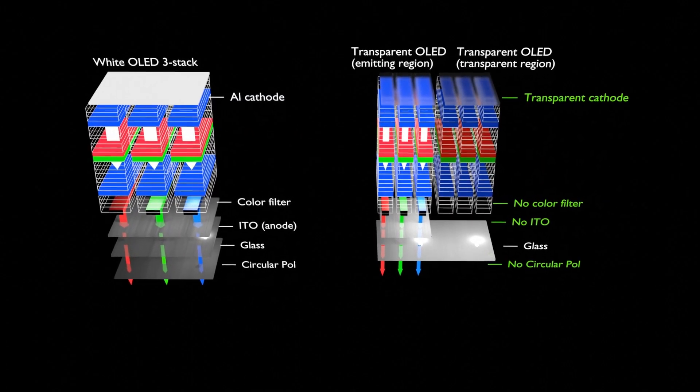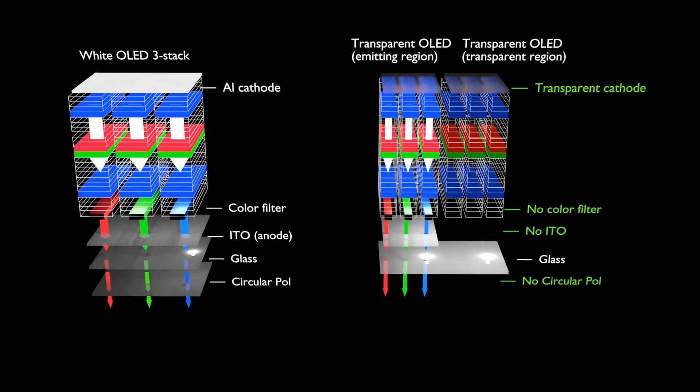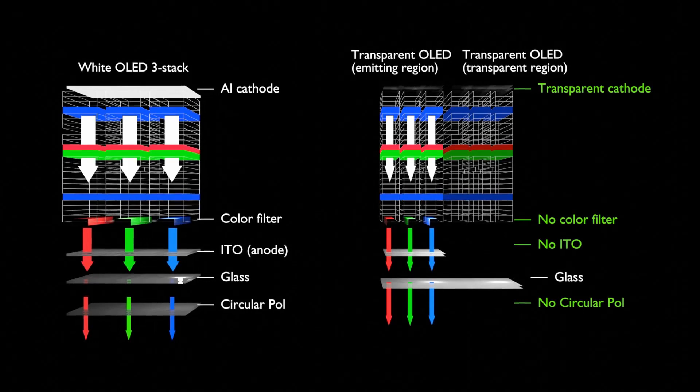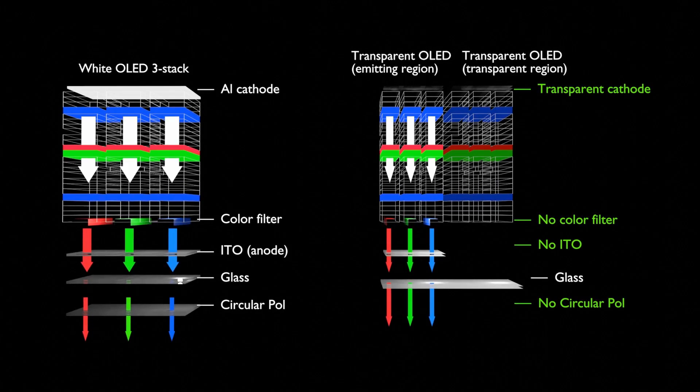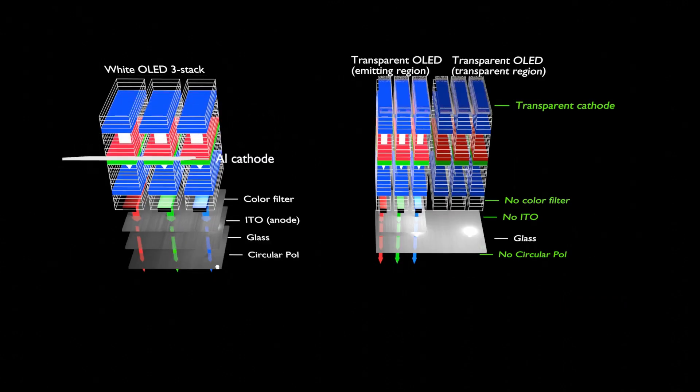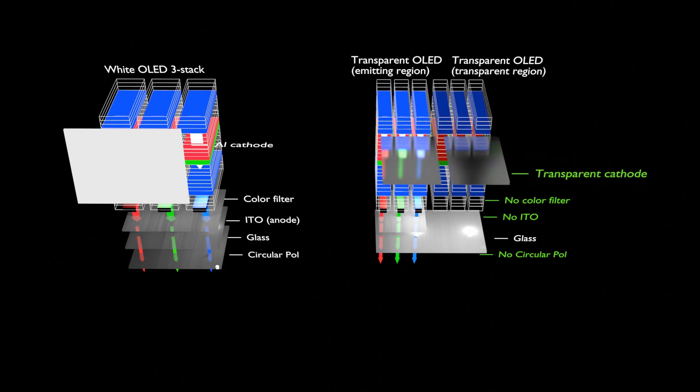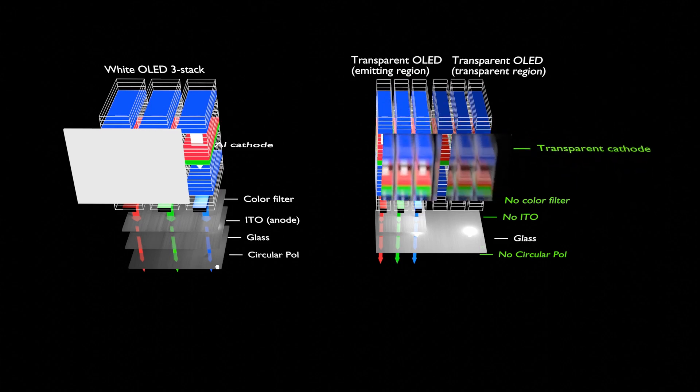The structure shown on the left side of the image is the structure of white OLED used in OLED TV, and the structure shown on the right side shows the light-emitting region that emits light and the transparent non-luminescent region. White OLED TV uses aluminum with high reflectivity as the cathode, while transparent OLED uses a transparent cathode similar to the top emission of mobile phone.